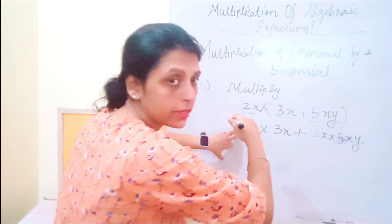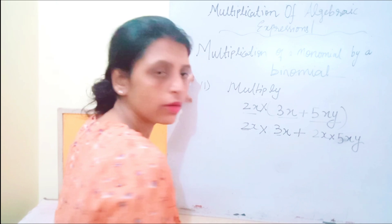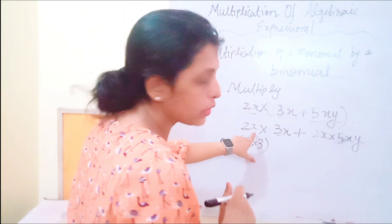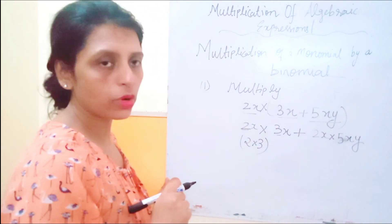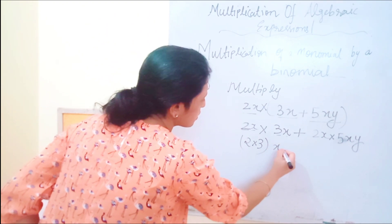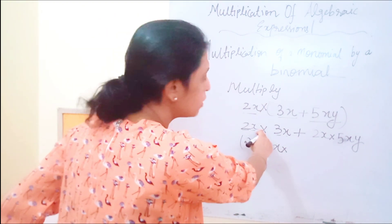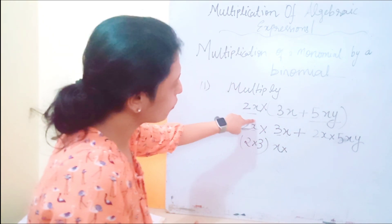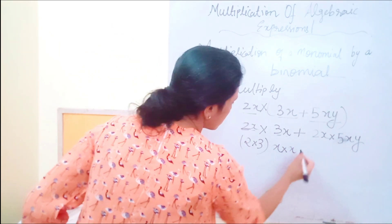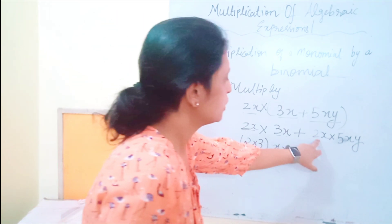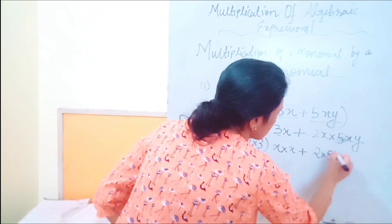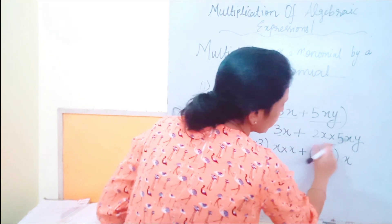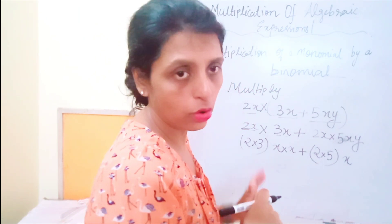The numerical coefficients are multiplied as usual: 2 times 3. For the variables, the laws of exponents are applied using the product rule, since the bases are the same and the operation is multiplication. The powers are not mentioned, which means each power is 1. So 1 plus 1 equals 2. Then for the second term, 2 times 5 gives 10, and again the product rule applies for the variables.